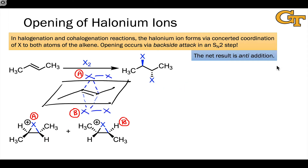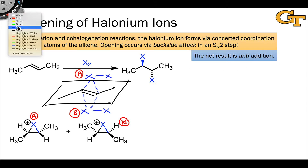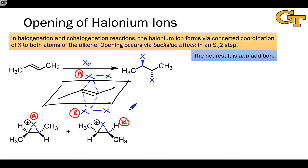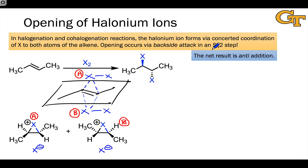Now, the net result of this reaction is anti-addition, because in the step that follows, the halonium ion is opened by the halide anion X-, which has been formed here as well. The halonium ion is opened by X- in an SN2 step via backside attack.